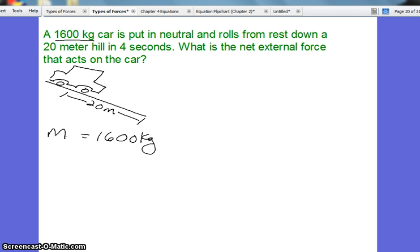We have that it says it rolls from rest, which means that our initial velocity is 0 meters per second. It says it rolls down a 20 meter hill. So the meters gives away that it is a displacement. It's a linear motion, so we'll just write this as delta x.